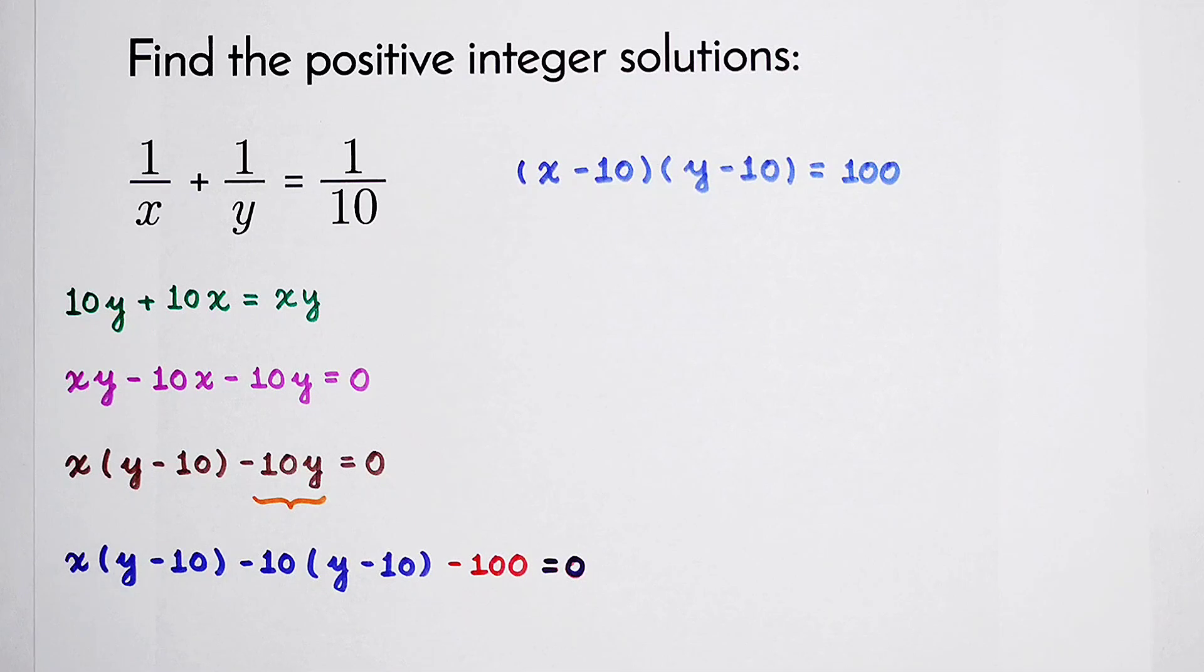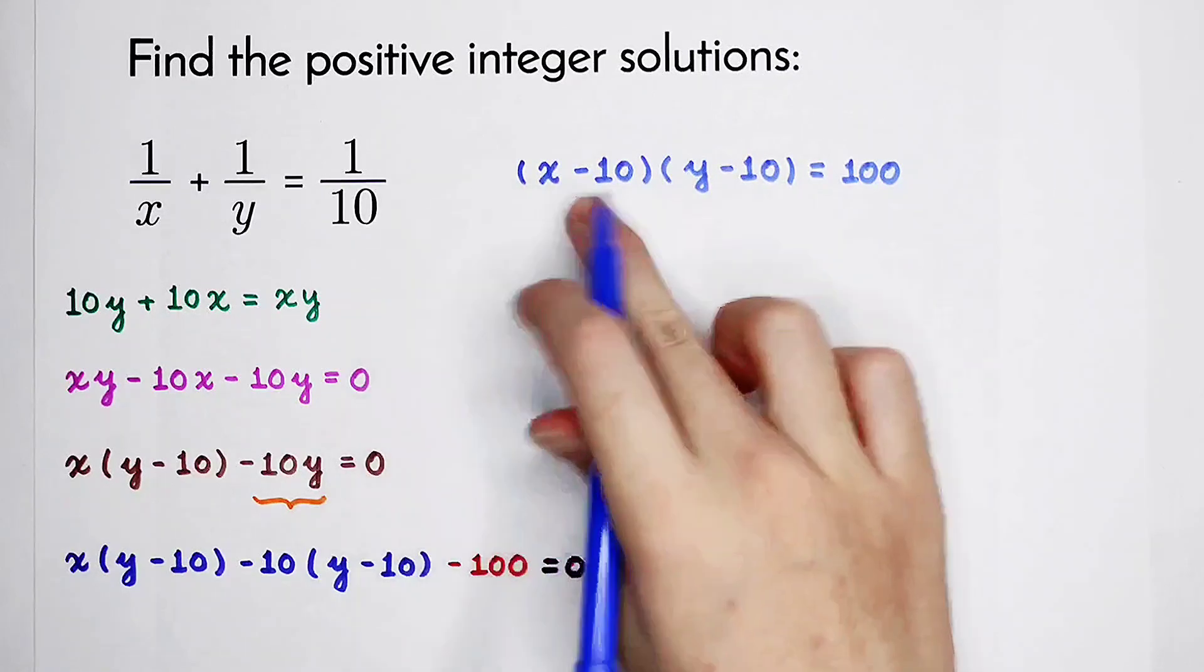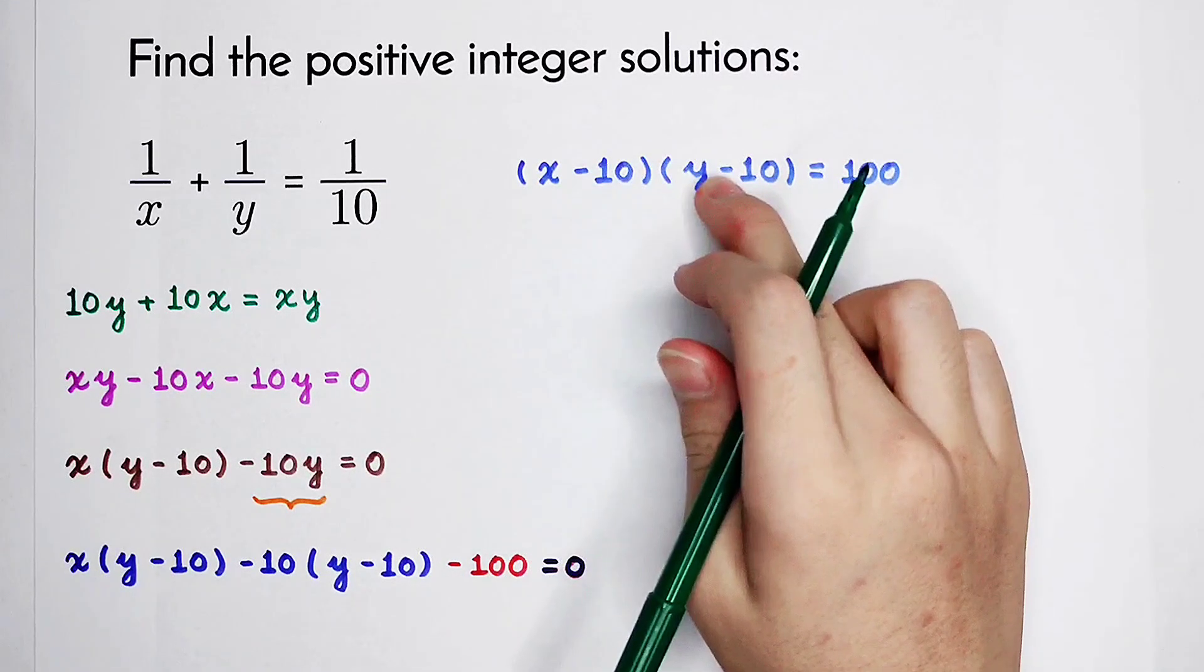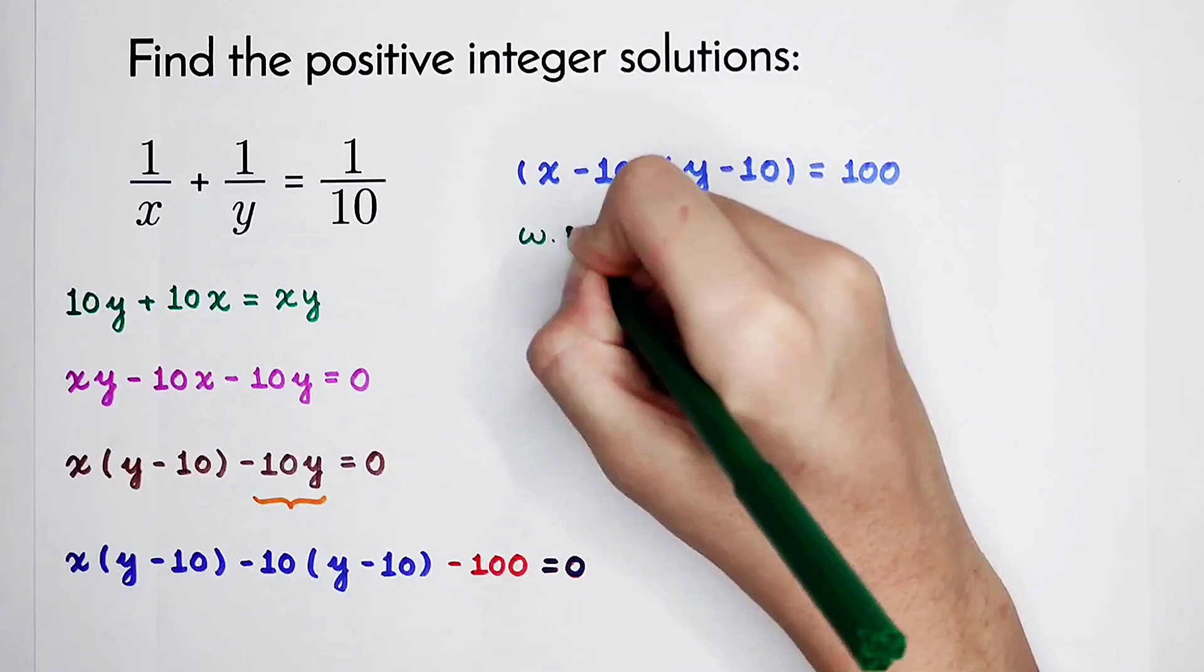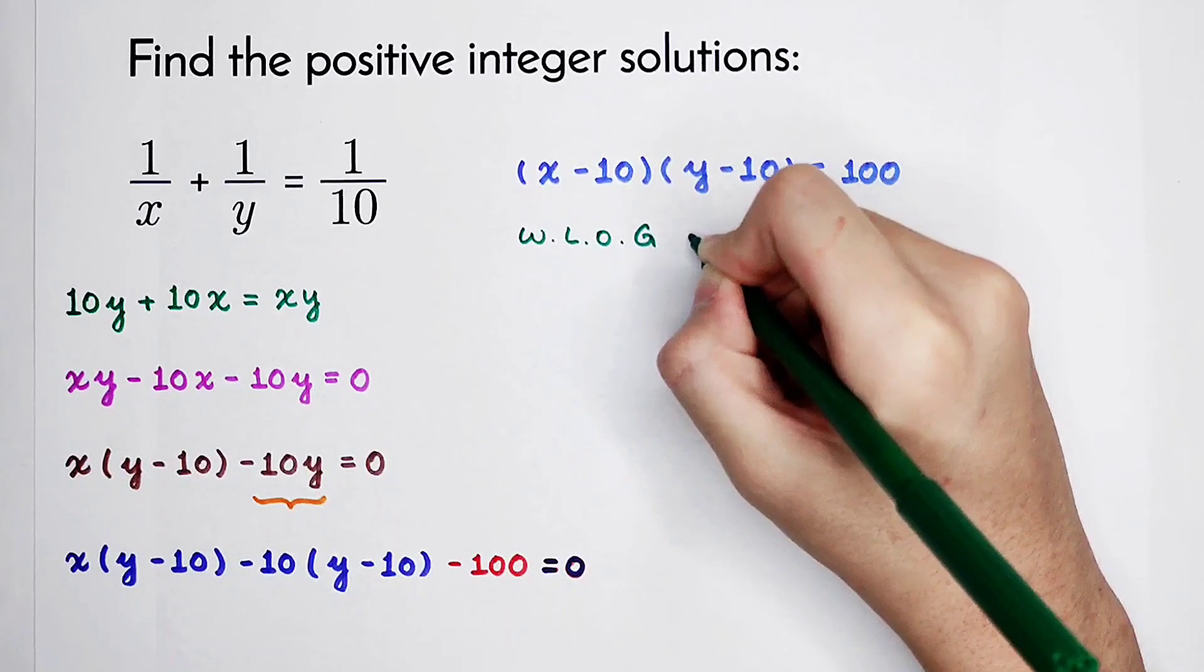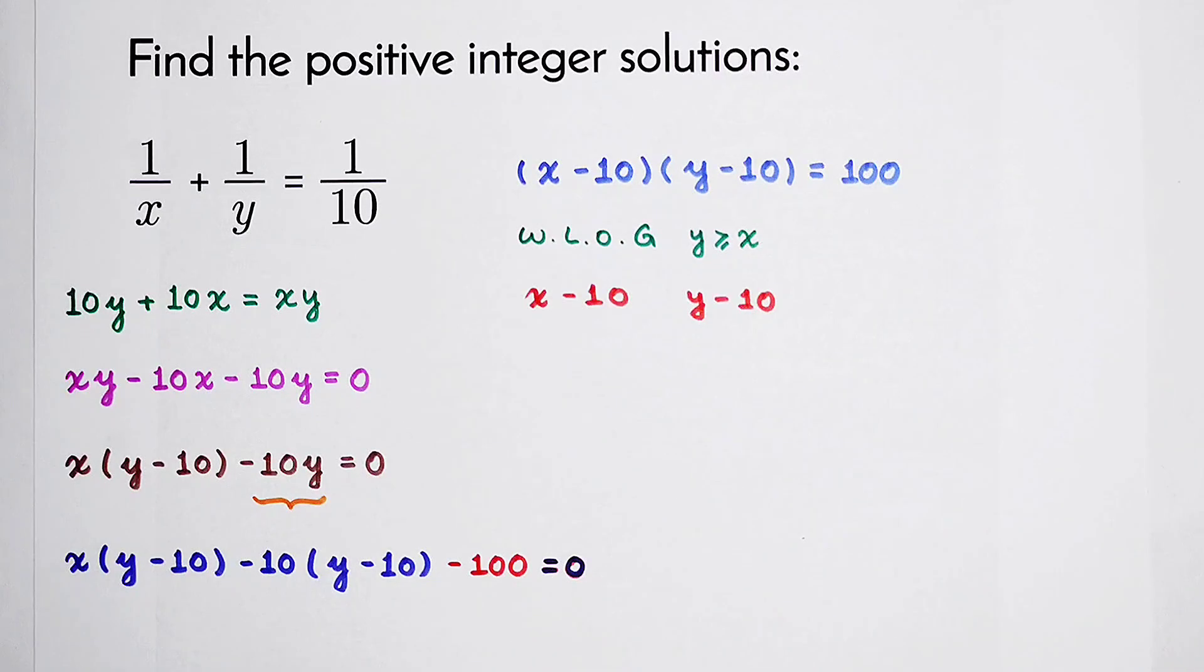The left side is a multiplication and the right side is just a positive integer. We have to solve the positive integer solutions of this equation. Since x minus 10 and y minus 10 are both symmetric, without loss of generality, we can suppose y is greater than or equal to x. So first, we have to find the factor pairs of 100.